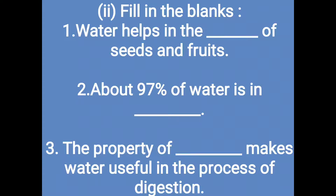Fill in the blanks. First: water helps in the germination of seeds and development of fruits — we can write development of seeds and fruits. Second: about 97% of water is in the ocean — the ocean has the most water.